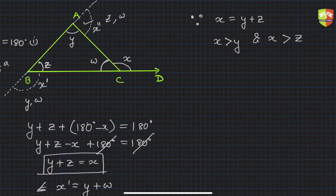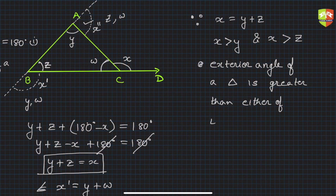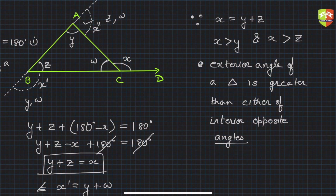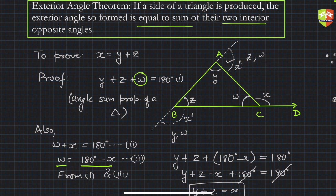We infer that the exterior angle of a triangle is greater than either of its interior opposite angles. There are six exterior angles in a triangle, and this theorem holds for each one of them — not just for any particular exterior angle, but for all of them.